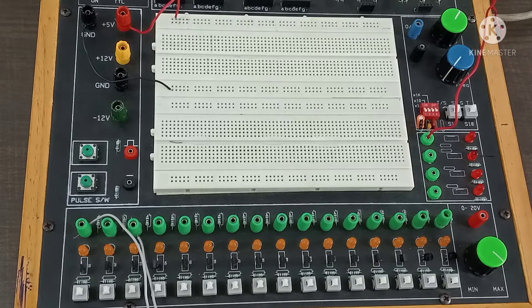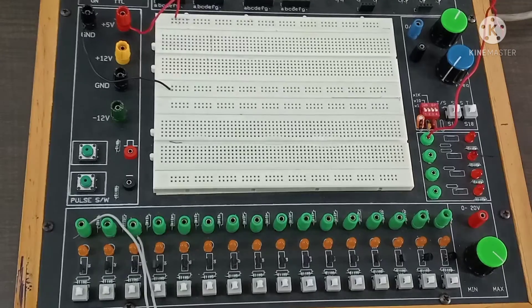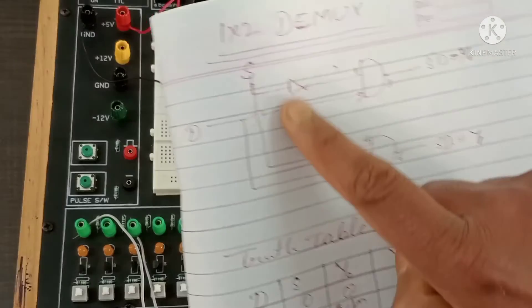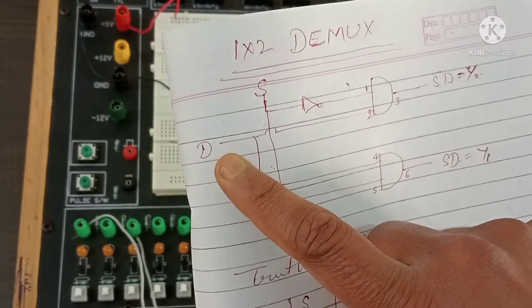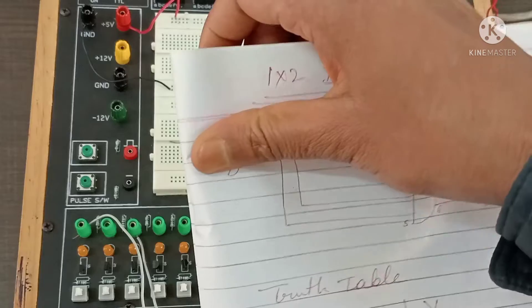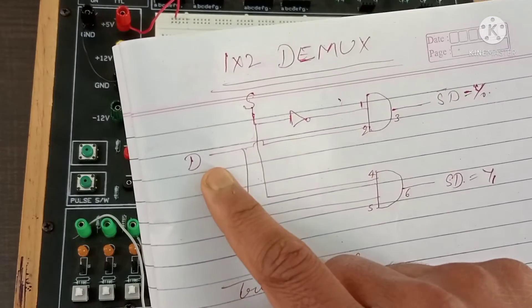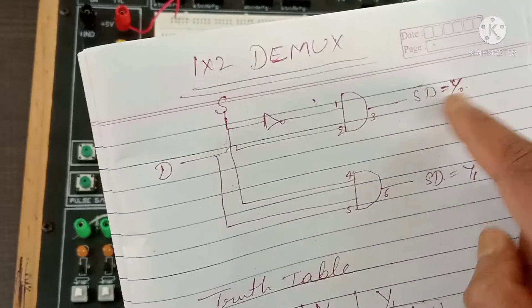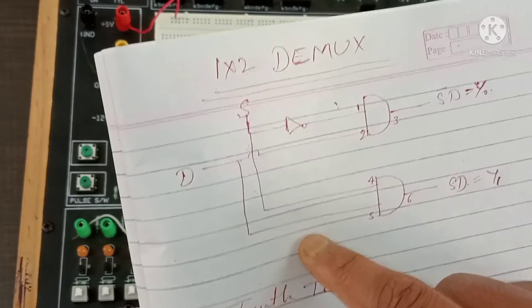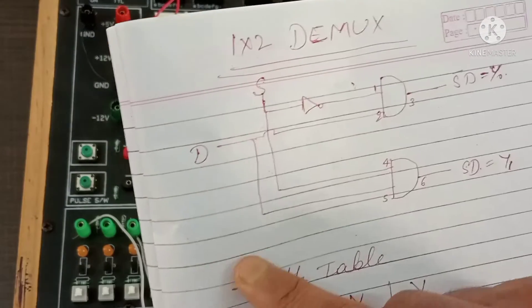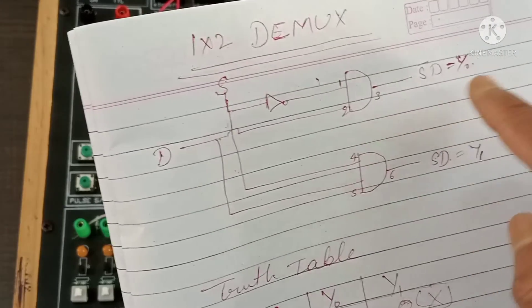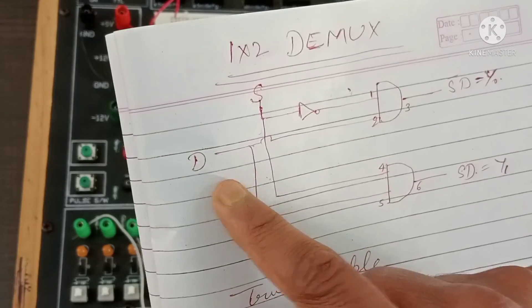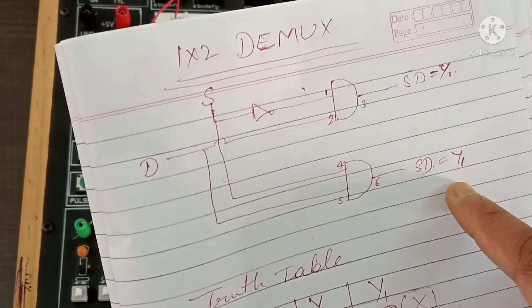First I will explain this circuit diagram. You can see this is the selection line, this is the NOT gate, and this is the data input. Data can be anything — any type of electrical signal. We use the demultiplexer to transfer data to either of the two output lines. There are two output lines and one input line, and the selection line determines whether data D will reach Y0 or Y1.